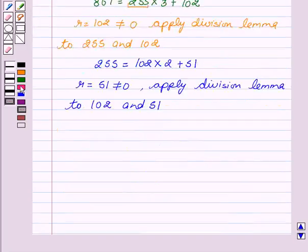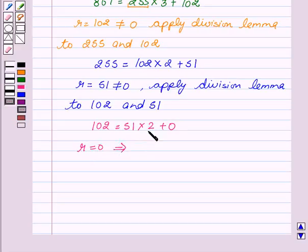So this gives us 102 divided by 51 gives 2 as the quotient and 0 as the remainder. Here we see that R equals 0, so this implies that 51, equal to D, is the HCF.